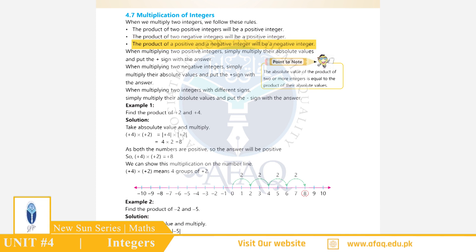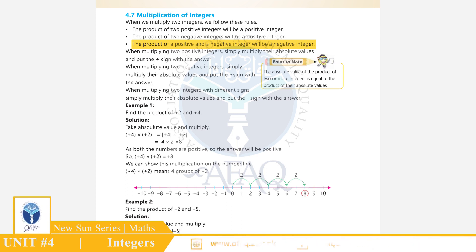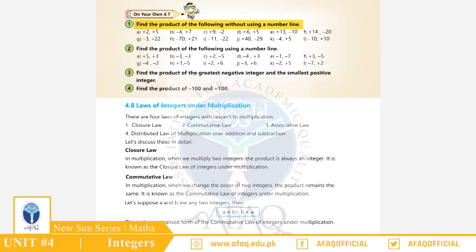Rule 3 - एक Positive Integer और दूसरा Negative Integer का Product हमेशा एक Negative Integer होगा। इन Rules को समझने के लिए Exercise से कुछ सवाल हल करते हैं, Page 69, Question No. 1.